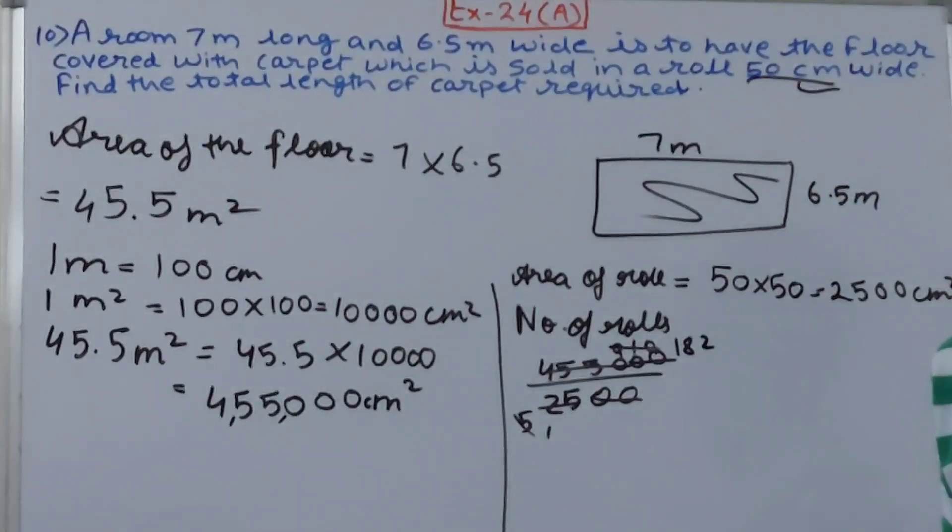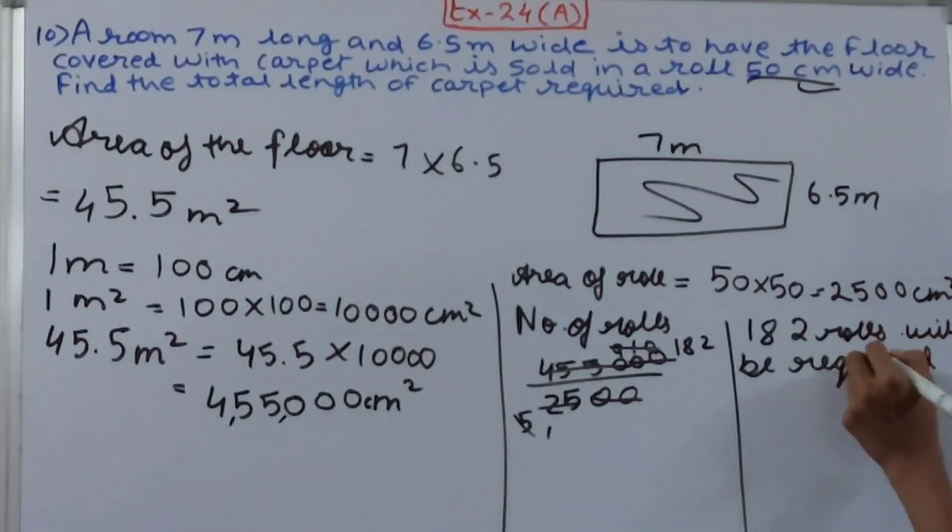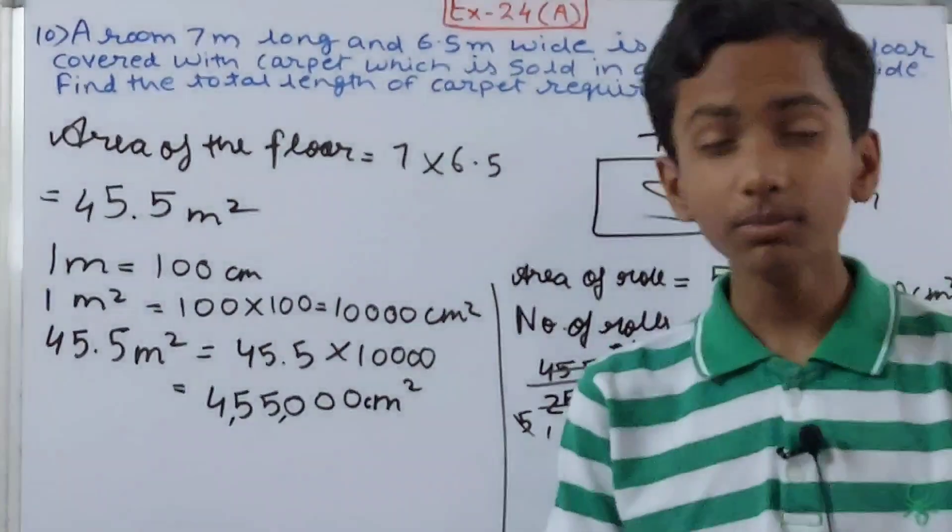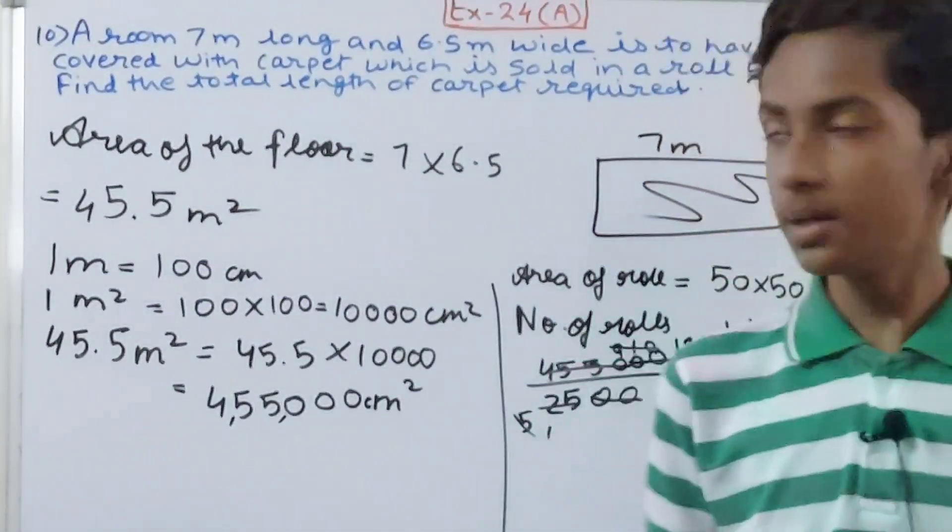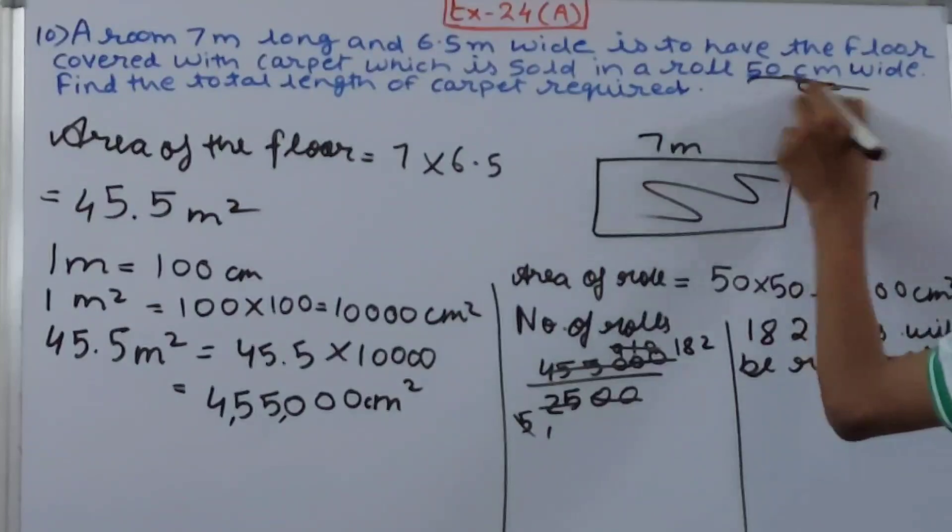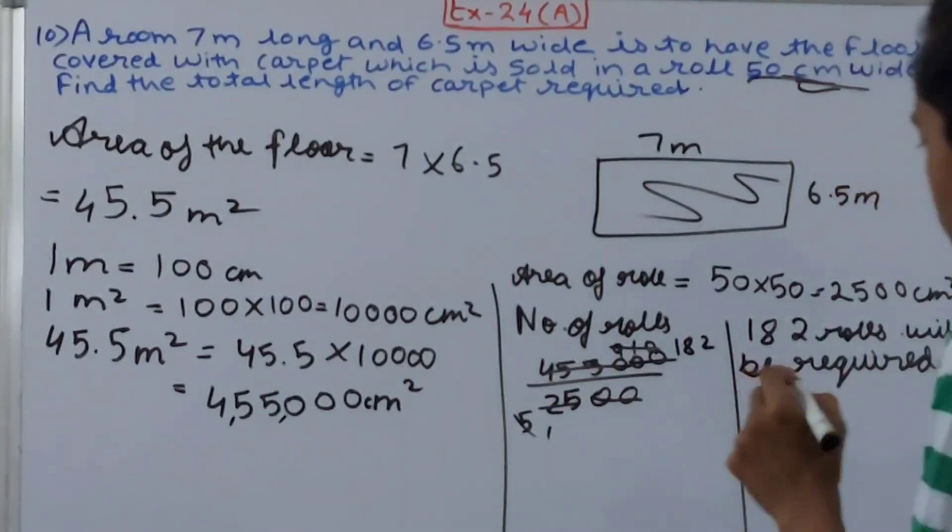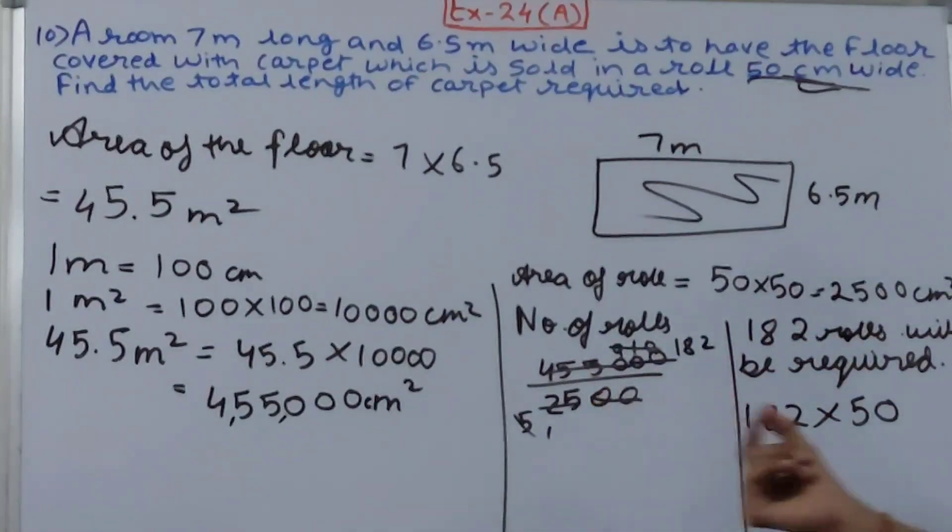So 182 rolls will be required. Now we know the number of rolls is 182. With this we will calculate the total length. If one roll is 50 centimeters wide, then 182 will be how many? 182 into 50 - this is going to be the length of 182 rolls.